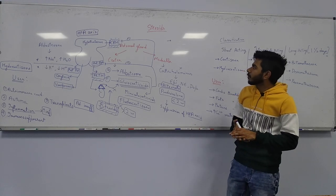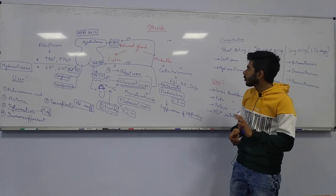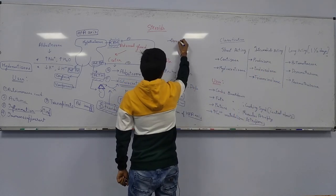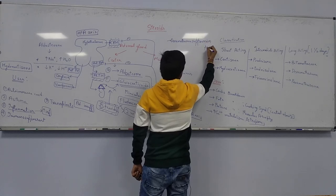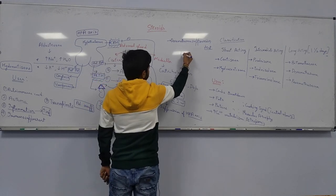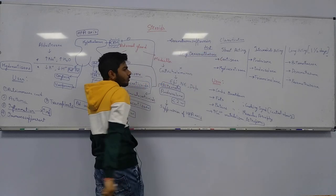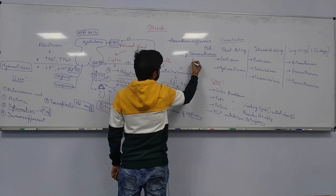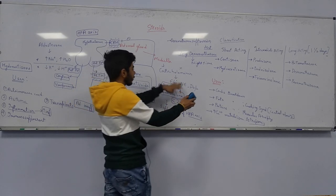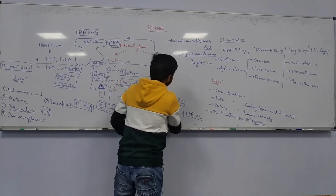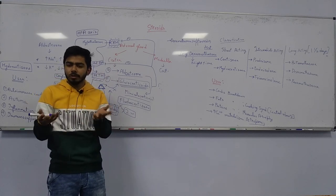There is one more important test related to steroids — the dexamethasone suppression test — used for checking Cushing syndrome in a patient. In this test, 1 mg of dexamethasone is given at night time. In Cushing syndrome, steroid levels are elevated in the blood circulation.